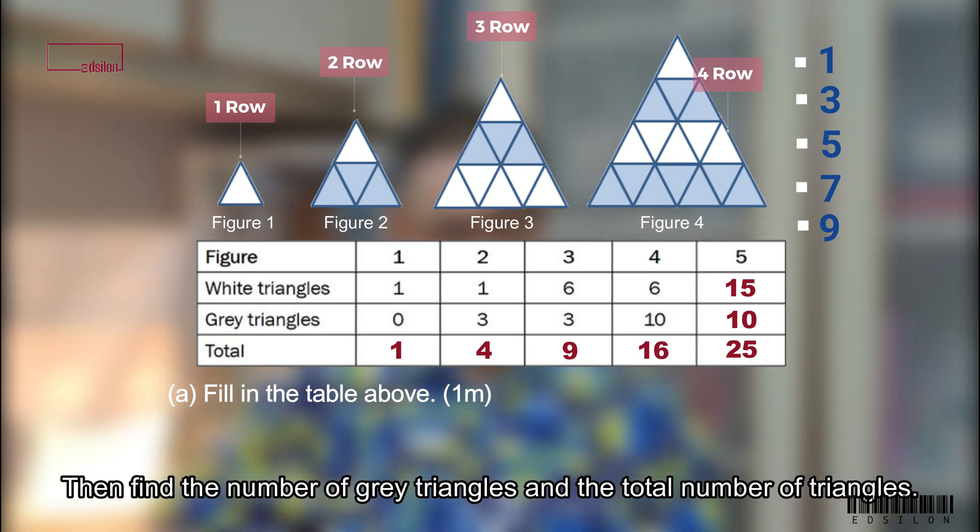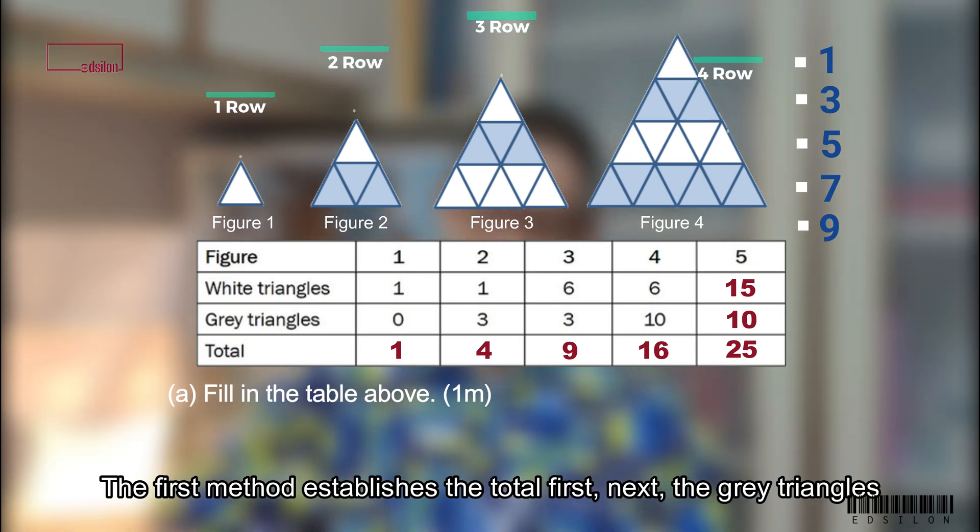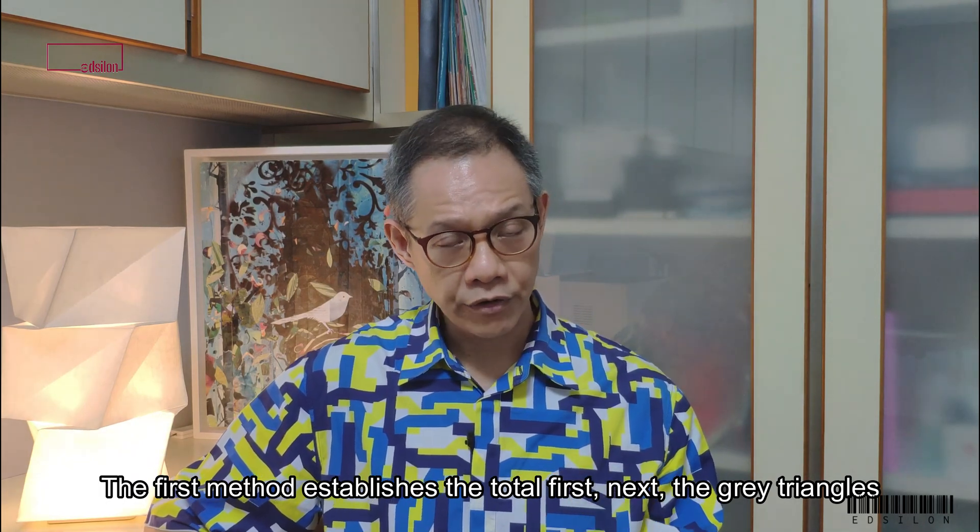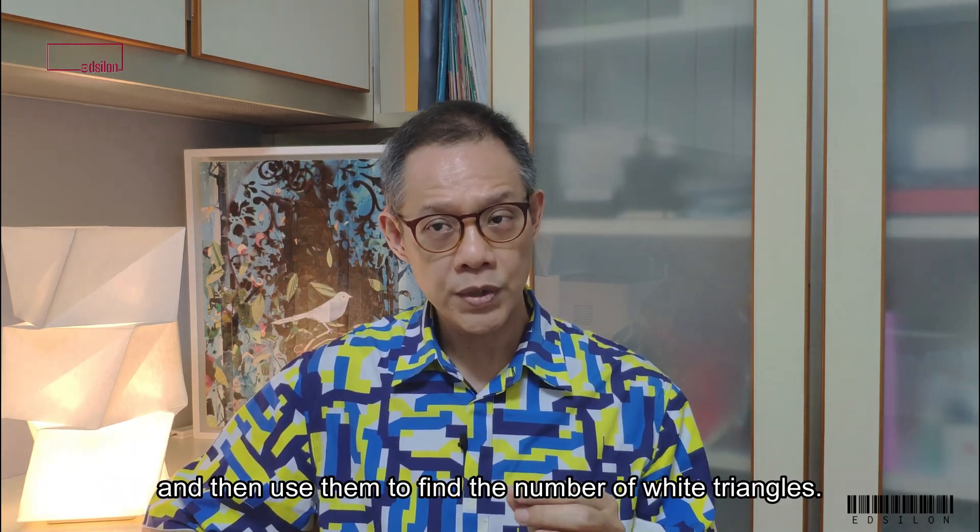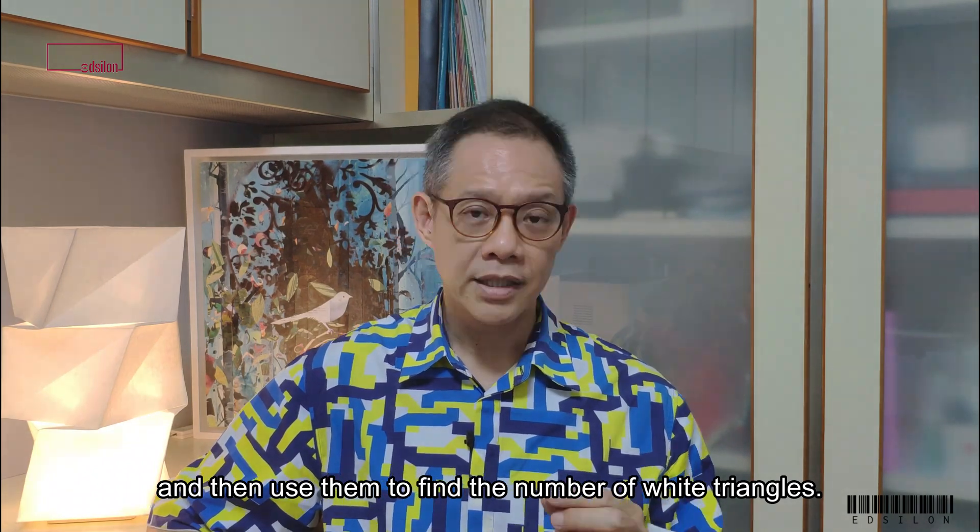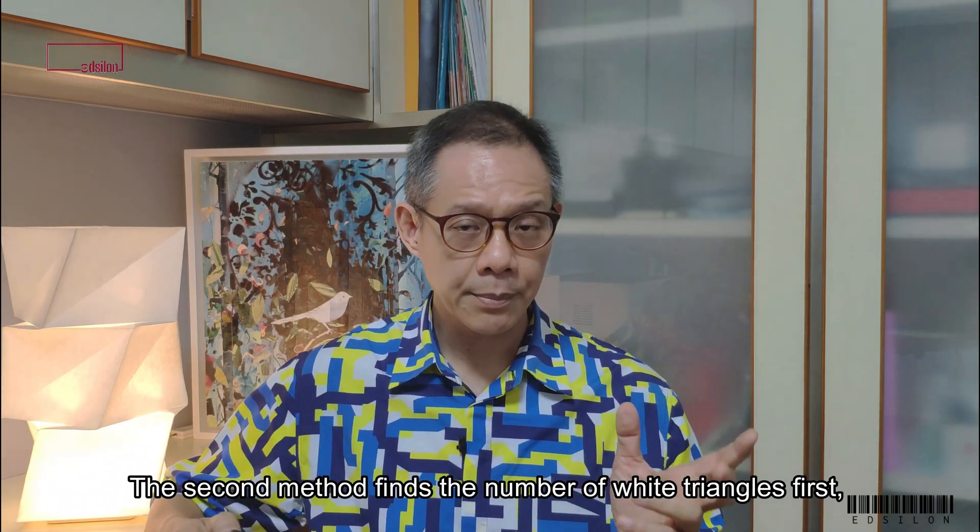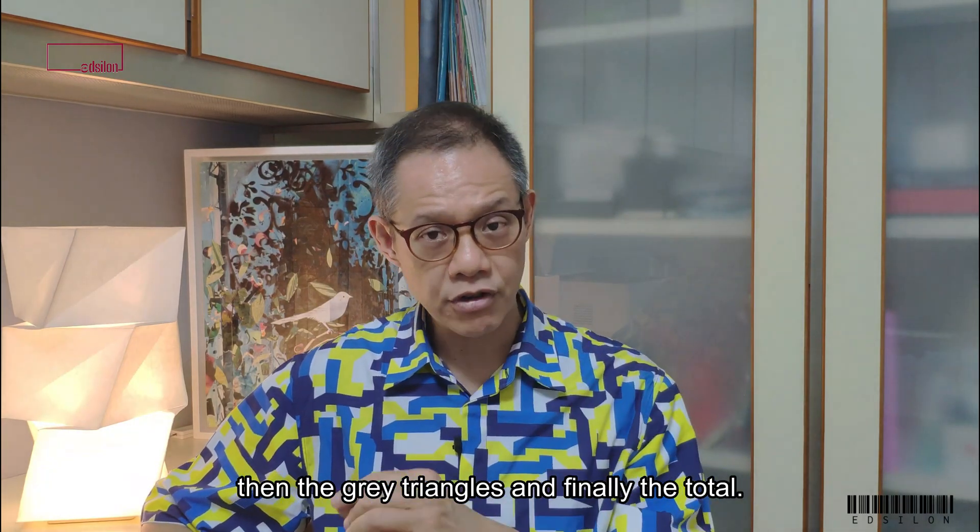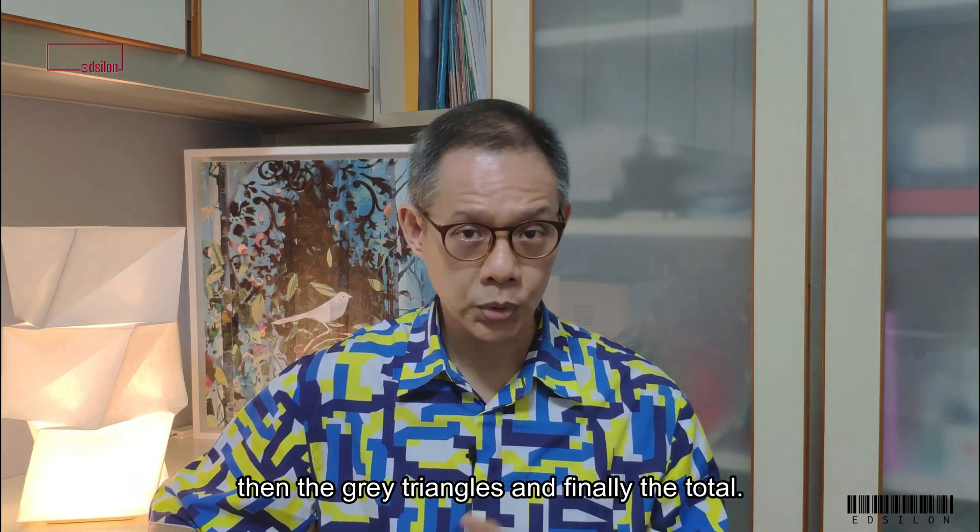Then find the number of grey triangles and the total number of triangles. The first method establishes the total first. Next, the grey triangles and then use them to find the number of white triangles. The second method finds the number of white triangles first. Then, the grey triangles and finally the total.